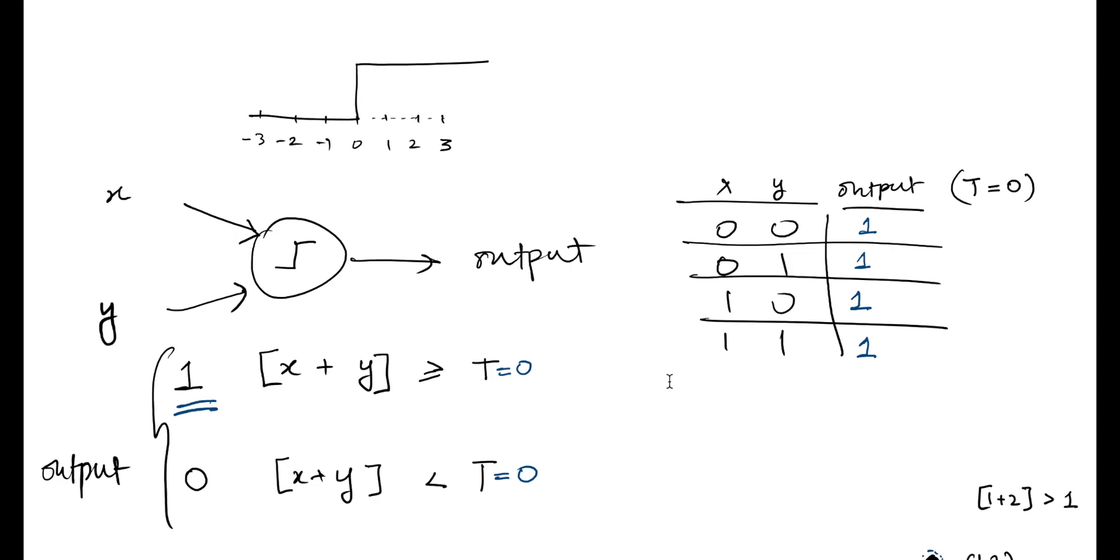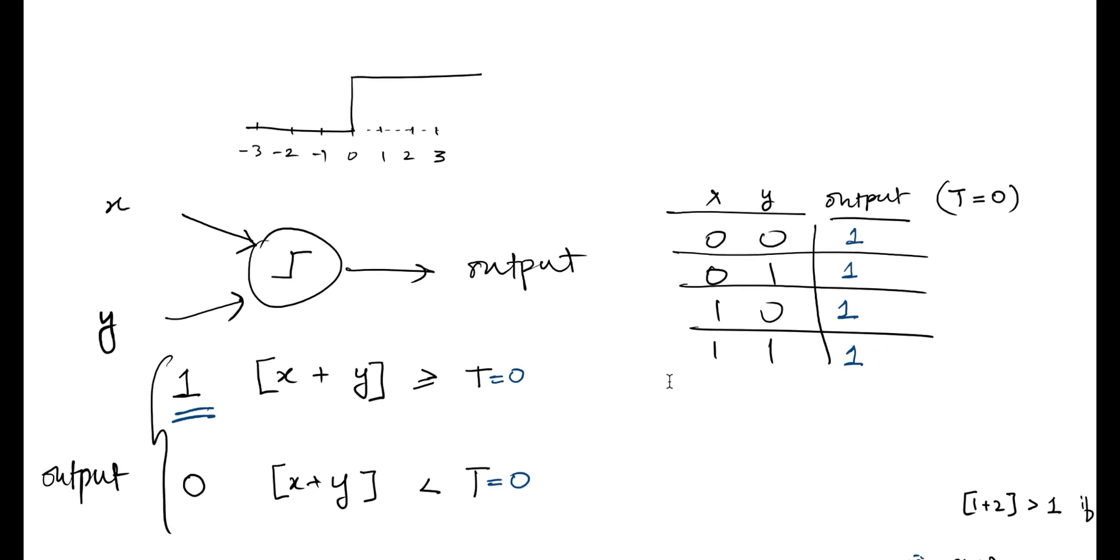In our discussion we progressed towards one particular representation where there could be multiple inputs to a neuron, and those inputs would simply get added up at the neuron. That sum, if it's higher than a particular threshold which we initially set as 0, determines if the neuron fires. If that sum is greater than or equal to 0, the neuron is going to fire.